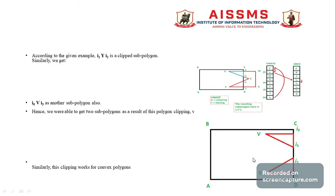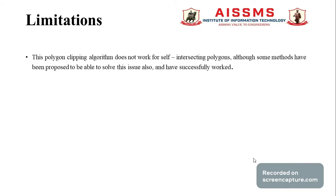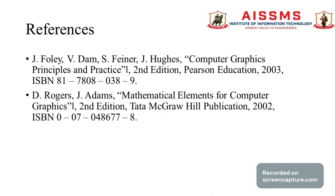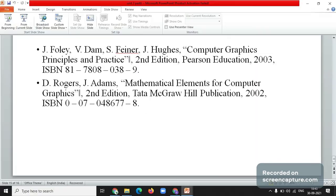This is how the Weiler-Atherton polygon clipping algorithm works — it works for both convex and concave polygons, making it simpler compared to other algorithms. However, a limitation is that it does not work for self-intersecting polygons, although some methods have been proposed to solve this issue. This completes the summary of the Weiler-Atherton polygon clipping algorithm, its working, and its limitations.